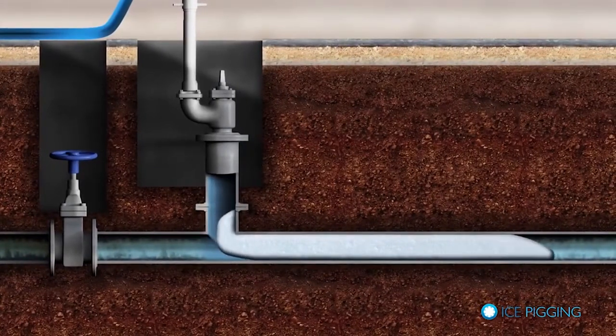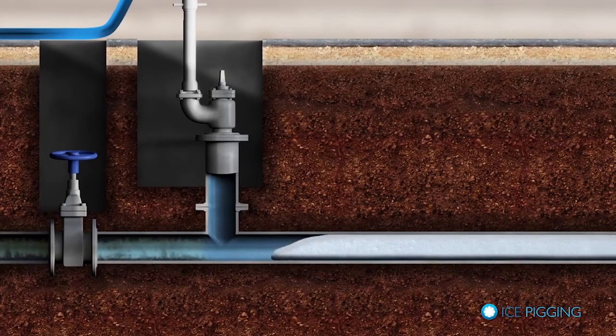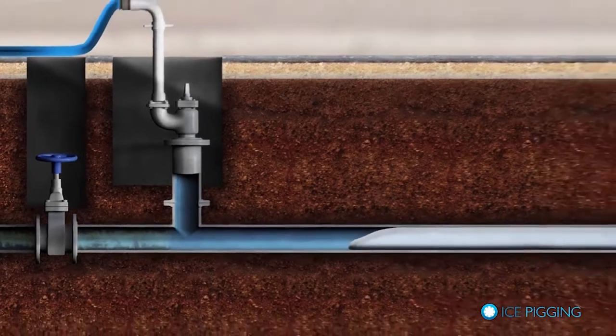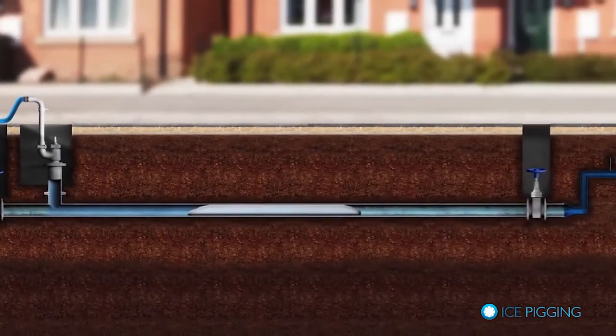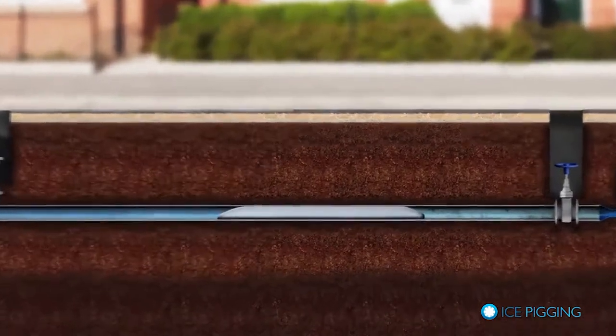When the ice insertion is complete, we disconnect from the pipe and fully open the upstream valve to provide the pressure to push the ice pig through the pipe, thus bringing about the cleaning process.